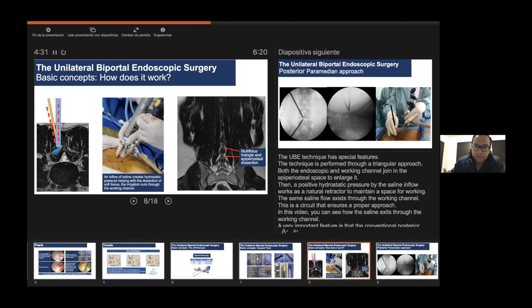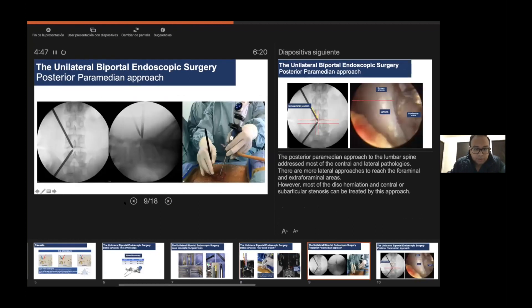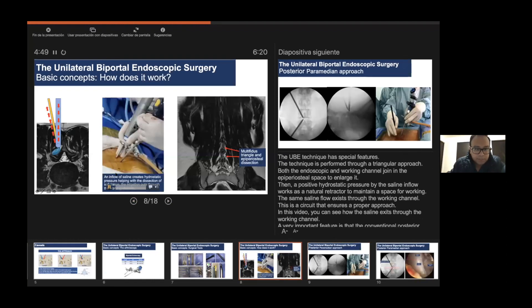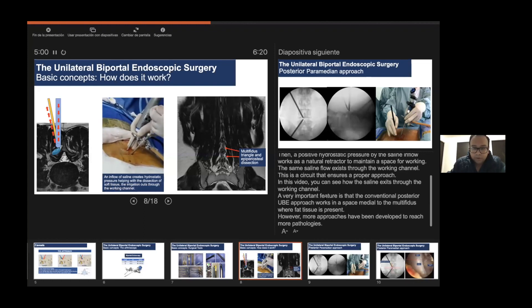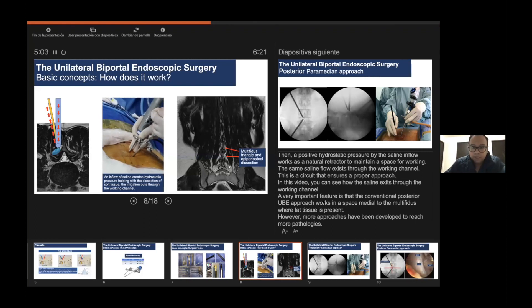Then a positive hydrostatic pressure by the saline inflow works as a natural retractor to maintain a space for working. The saline flow exits through the working channel. This is a circuit that ensures a proper approach. You can see in this video how the inflow saline passes through the endoscopic channel and exits through the working channel.